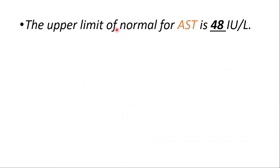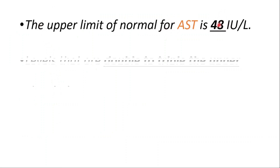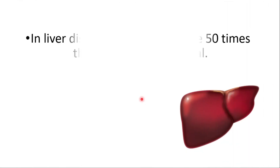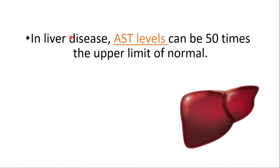The upper limit of normal AST is 48. Levels that are double to triple the upper limit of normal are considered mildly elevated. In liver disease, AST levels can be 50 times the upper limit of normal.